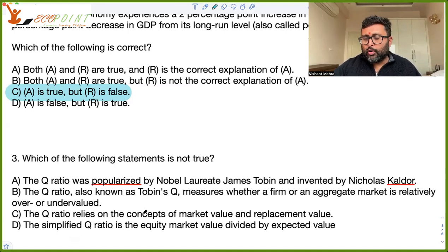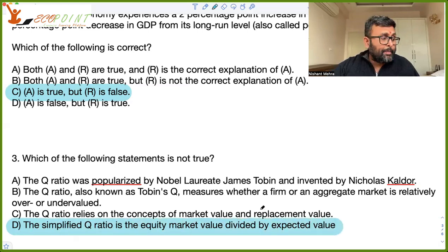So it is market value upon replacement cost of assets. So A, B, and C are all true. The simplified Q ratio is the equity market value divided by the expected value. That's not true. So it is market value upon replacement cost, right? Replacement cost of the asset.